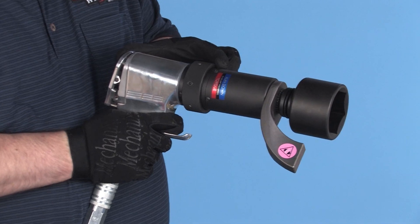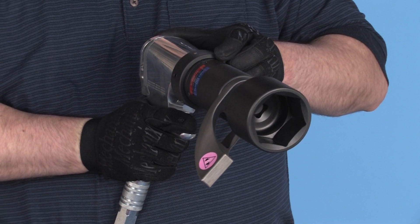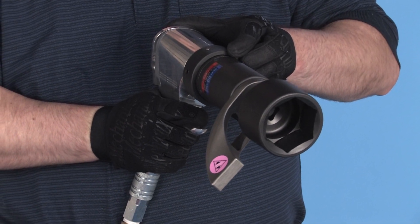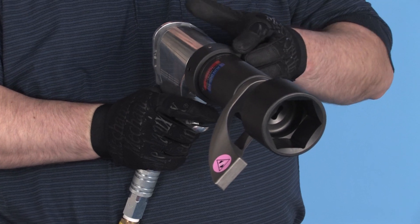But before we can torque, the tool must be shifted to the low-speed power mode. The reaction arm will not attach until this shift is done, ensuring that it cannot spin at high speed.